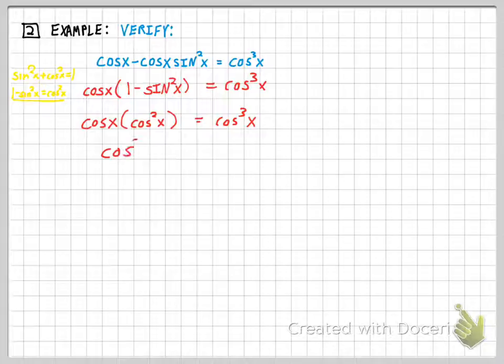Keeping going here, I have cosine times cosine squared, which is cosine to the third. And very quickly, you end up with your result. You are done with the problem when you show that the left side and the right side are, in fact, equal.